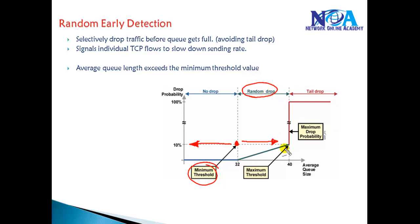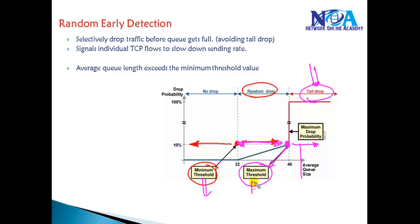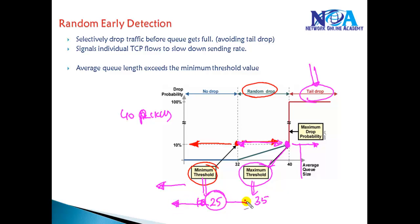The maximum threshold value defines the upper bound. Anything between the minimum threshold and the maximum threshold will have random drops applied. For example, if an output queue supports 40 packets, we can define the minimum threshold as 25 and the maximum threshold as 35. So anything below 25 will not be dropped, and between 25 and 35 packets will be randomly dropped.